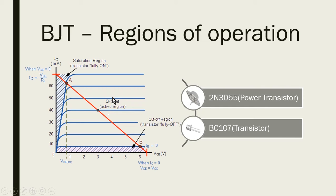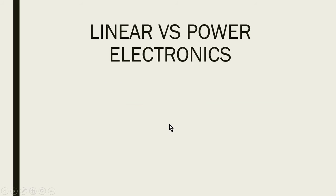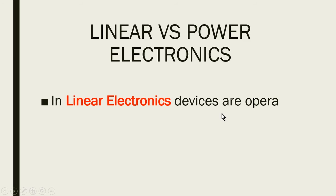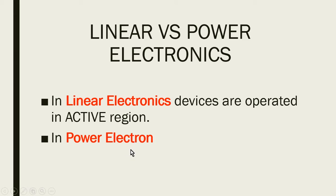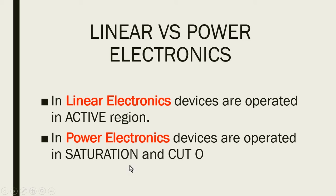Linear electronics devices work in the active region, while power electronics devices work in the saturation and cutoff states. In linear electronics, devices are operated in the active region. In power electronics, devices are operated in the saturation and cutoff region.